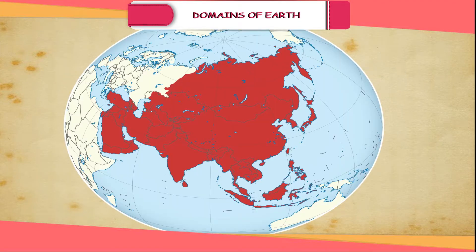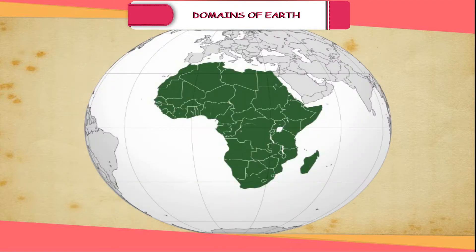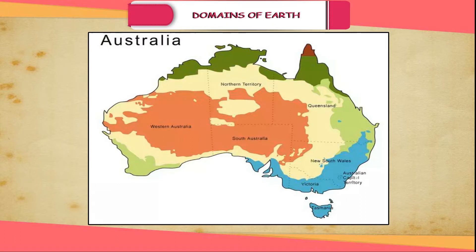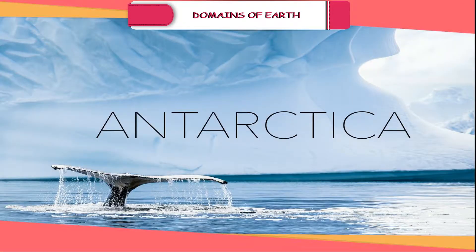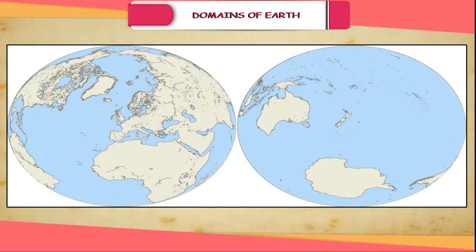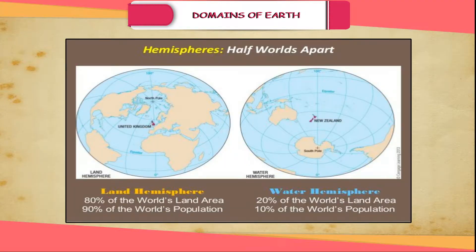Continents. There are seven major continents, namely Asia, Africa, Europe, Australia, North America, South America and Antarctica. Look at the map of the world, figure 7.1, and notice that the greater part of the landmasses lies in the Northern Hemisphere, which is called Land Hemisphere. Most of the Southern Hemisphere is covered by oceans and seas. This hemisphere is called Water Hemisphere.